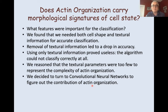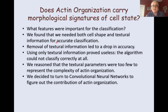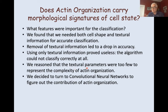I'm going to skip a lot of the details from this study — it's actually been published so you can read it. The question I'm going to be talking about in the remaining time is: does actin organization carry morphological signatures of cell state? To answer this, we have to ask what features are important for the classification. We found that we needed both cell shape and textural information for accurate classification. Removal of textural information led to a significant drop in accuracy, but using only textural information proved useless — the algorithm could not classify correctly at all.